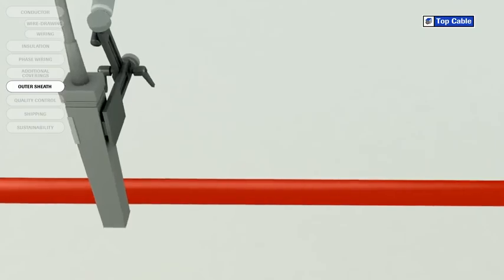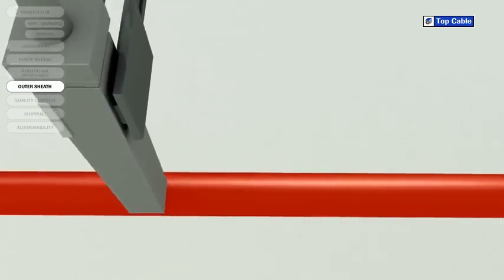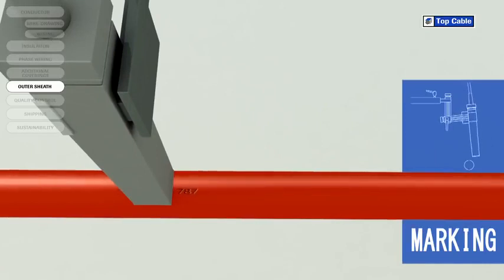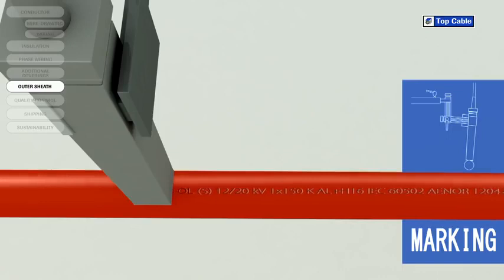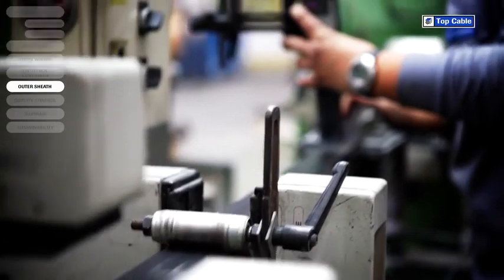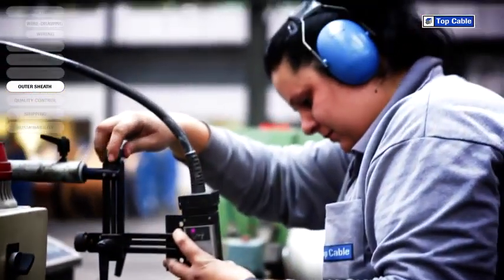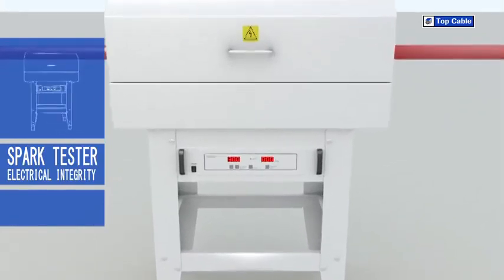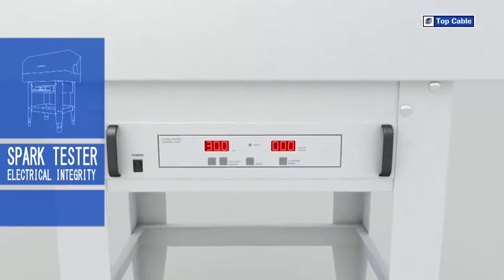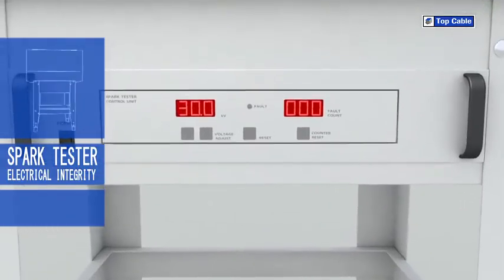So that all Top Cable customers can correctly identify their cables, the cables are marked with the most important information: manufacturer, trade name, cable name, number of conductors, cross section, construction regulation and standards, CE marking, and other information of interest such as the product's certification. There is also a meter by meter mark on the cable to help customers with their stock control.